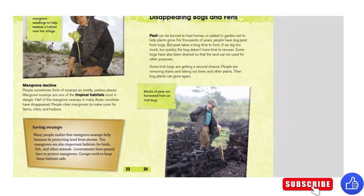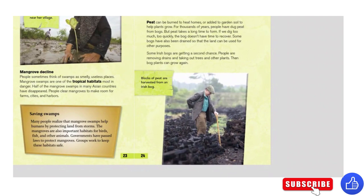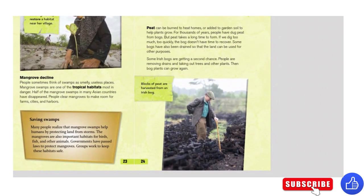Disappearing bogs and fens. Peat can be burned to heat homes or added to garden soil to help plants grow. For thousands of years, people have dug peat from bogs, but peat takes a long time to form. If we dig too much too quickly, the bog doesn't have time to recover. Some bogs have been drained so that the land can be used for other purposes. Some Irish bogs are getting a second chance — people are removing drains and taking out trees and other plants so bogs can grow again.